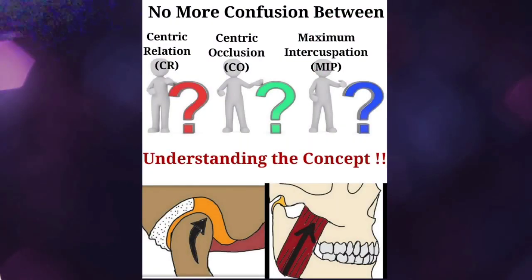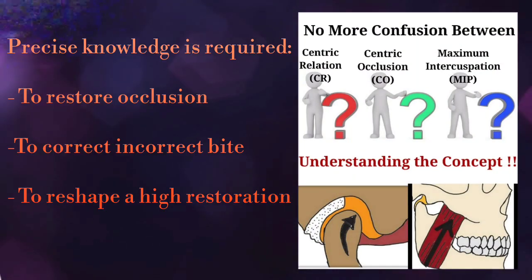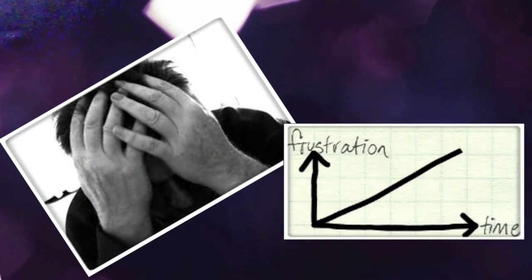Hello everyone, in this video I'll talk about certain terminologies and their clinical importance, which you might have already guessed from the title. These should be well understood to have clarity about the concepts of occlusion. Attempting to restore an occlusion or correcting a problematic bite, or even reshaping a high restoration without precise knowledge about maxillomandibular relationship can result in time wastage or frustration of both the dentist and the patient, and unnecessary over-treatment.